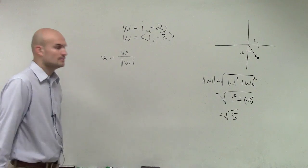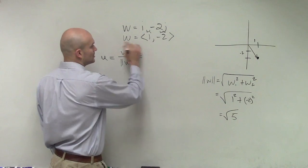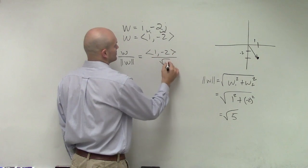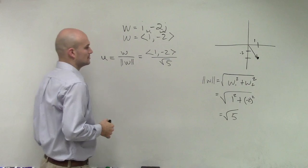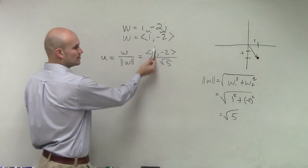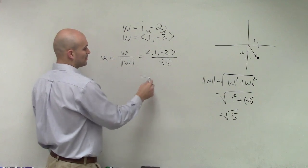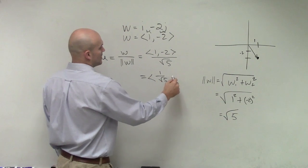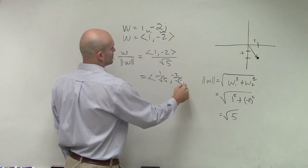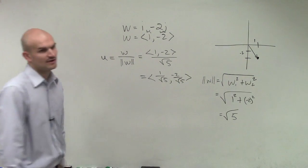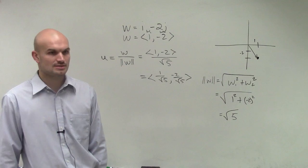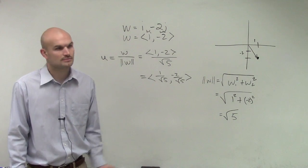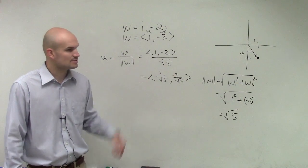So then we just replace w as our coordinate point, 1, negative 2, divided by the square root of 5. Then you just distribute, divide that by both terms. So therefore, you have 1 over the square root of 5, comma, negative 2 over the square root of 5. And we'll leave our answers with our radical on the bottom. So you have that, and that's going to be your unit vector. You can obviously rationalize it and just keep it like that.